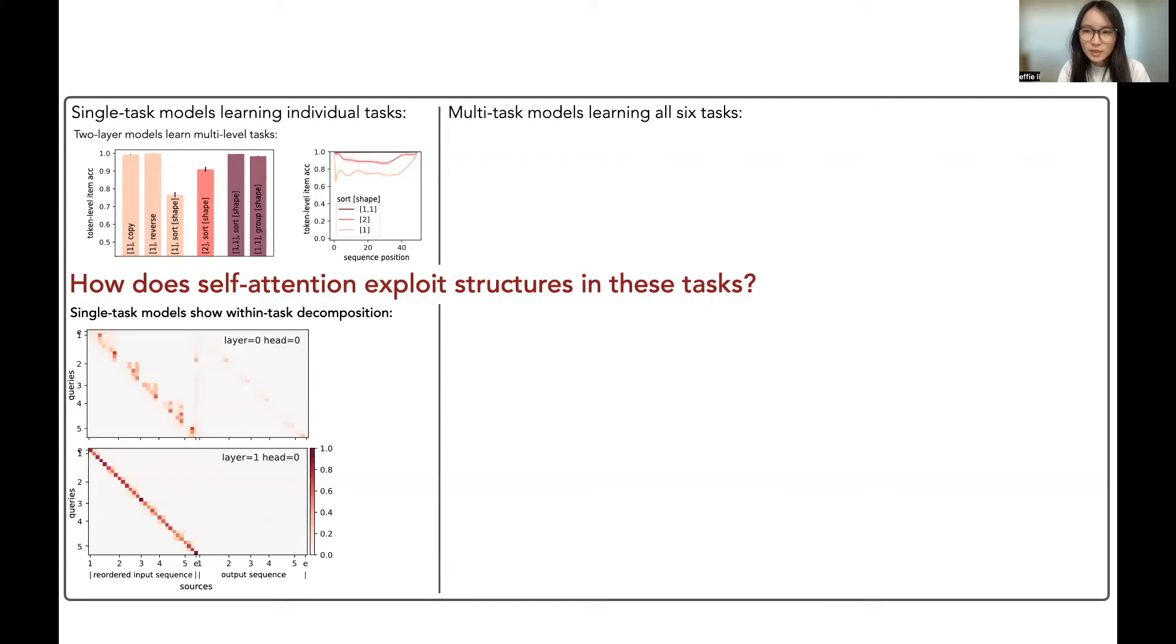Further, the two-layer models are employing a two-stage solution to decompose the tasks. Here, I'm showing the attention maps for a generalization sequence in a model that learned the sort task.